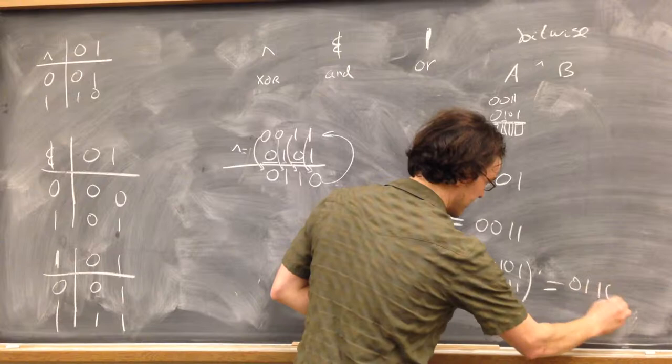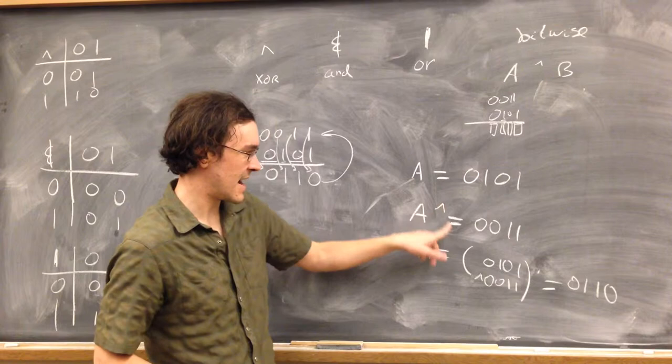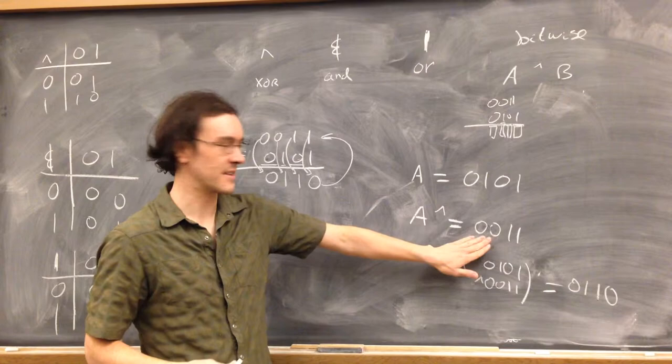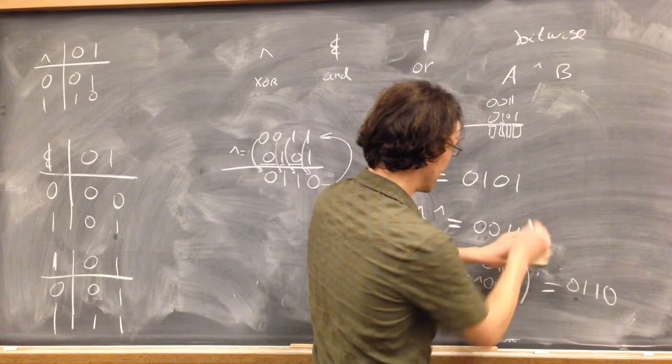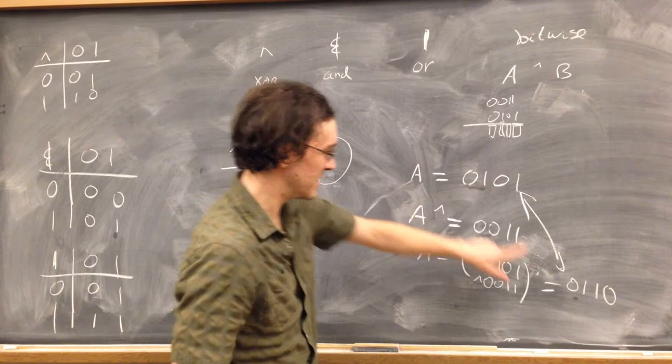Wherever there's 0s in the thing that you hat equals with, the 0s mean don't touch the original thing. Wherever there's 1s, it means flip it. So to get from the original A to this, wherever there's 0s you leave them the same. Wherever there's 1s, you just flip those and get that.